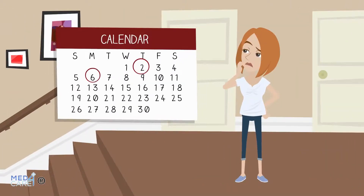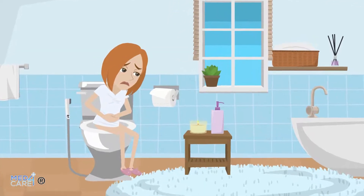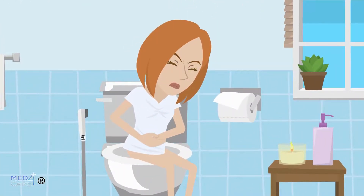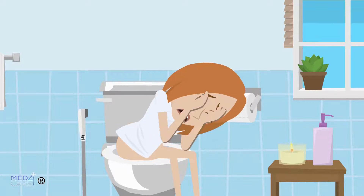The Rome Criteria 4 include: fewer than three bowel movements per week; hard stools; sensation of anorectal obstruction; sensation of incomplete evacuation; carrying out manual maneuvers to complete the act of evacuation in more than a quarter of total evacuations; and resorting to physical exertion for more than a quarter of the time necessary for evacuation.